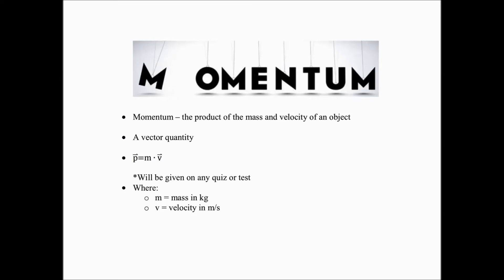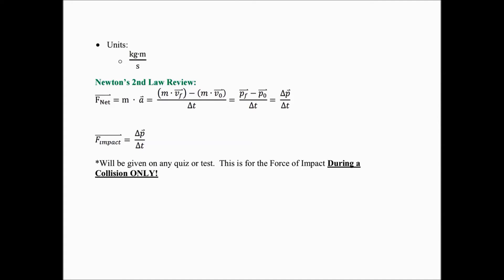Let's go ahead and get our definition stuff out of the way. Momentum is the product of the mass and the velocity that an object has. It's a vector, so that means it's got magnitude and direction. We have a boxed equation here, which means I'm going to give it to you on any quiz or test — that's mass times velocity. In standard units, the units are kilogram meters per second. This does not turn into a new unit like joules for energy; it just stays kilogram meters per second.